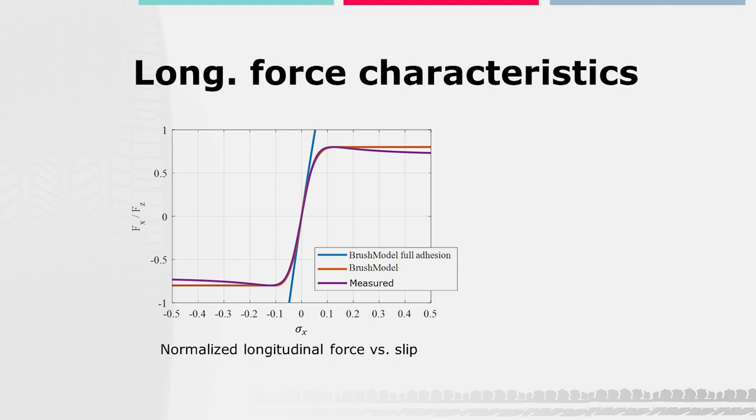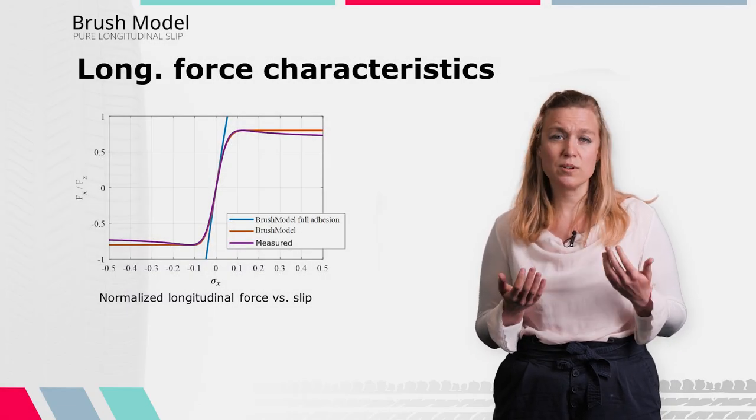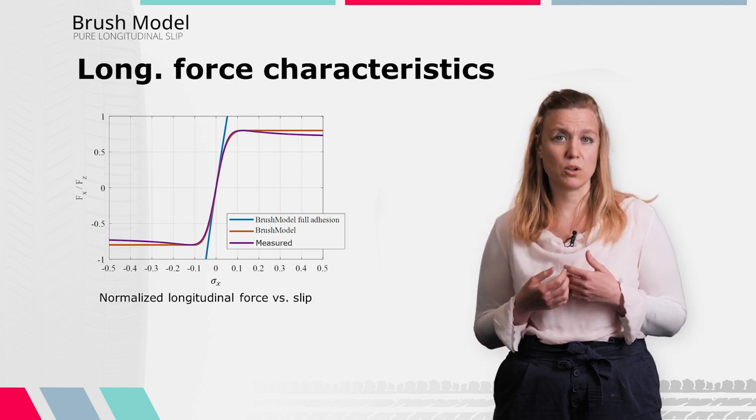With the assumptions made so far, the longitudinal force from the brush model remains constant beyond a certain longitudinal slip. When comparing the red brush model curve to measured characteristics shown in purple, it can be seen that the saturation of the measured characteristics with increasing longitudinal slip is not accurately modeled. In the next lecture, we will see that with different assumptions, this deviation at higher slip values can be reduced in the brush model.